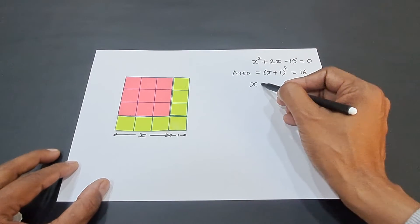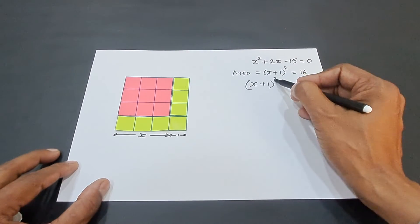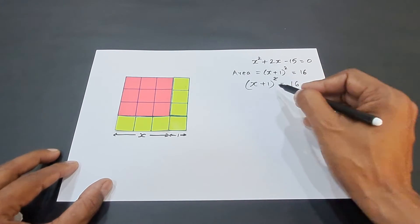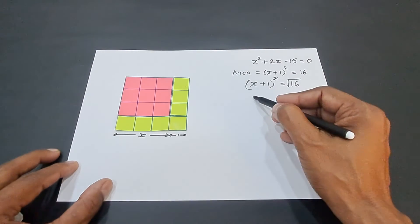Now, if (x + 1)² becomes equal to 16, then we can cancel the square and take this in the square root.